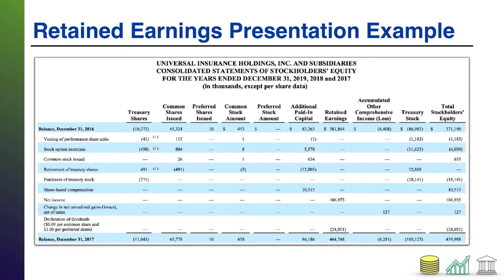You'll see some examples where there are some other miscellaneous adjustments in there — some companies will have those. But in general, these are the elements you will see: beginning plus net income minus dividends equals ending. And that is your retained earnings presentation nested within the statement of stockholders' equity.